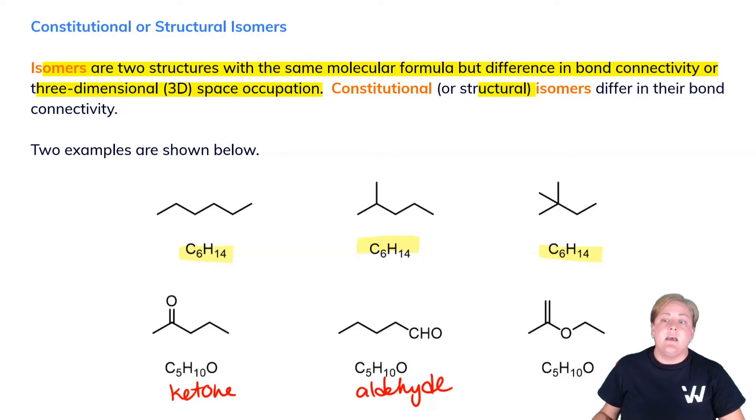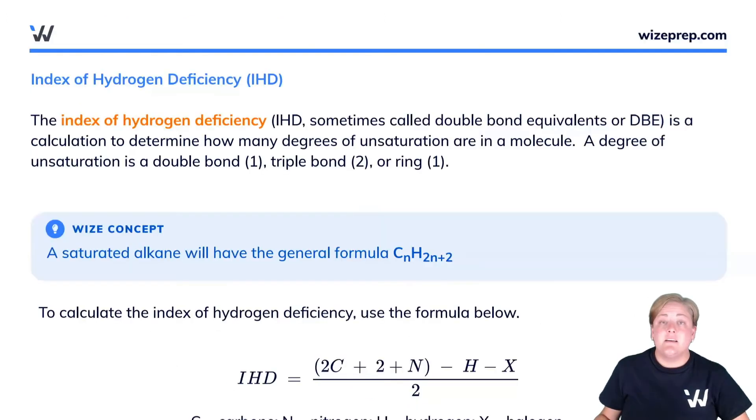There's one last important connection with constitutional isomers to spectroscopy called the hydrogen deficiency index. The hydrogen deficiency index, or the index of hydrogen deficiency, sometimes called double bond equivalence or DBE, unfortunately there's about four different ways to name this. All of it is connected to a calculation to determine how many degrees of unsaturation are in a molecule. Remember that unsaturation is multiple bonds or rings. A degree of unsaturation can be a double bond which uses up one, a triple bond which uses up two, or a ring which uses up one.